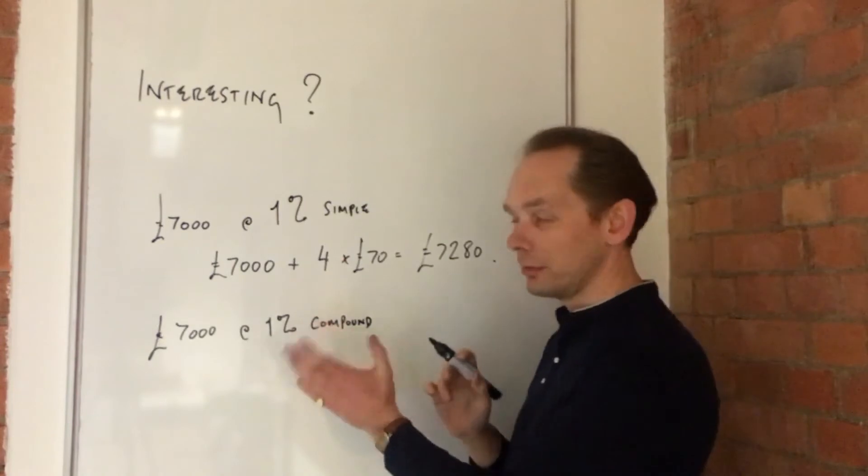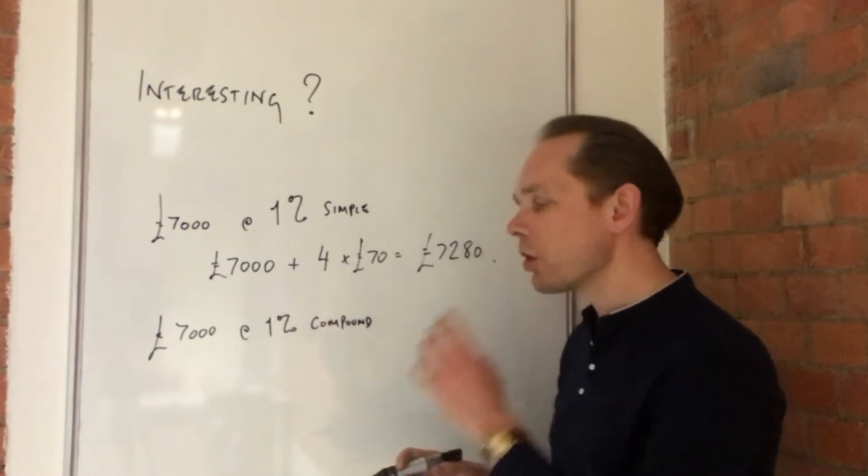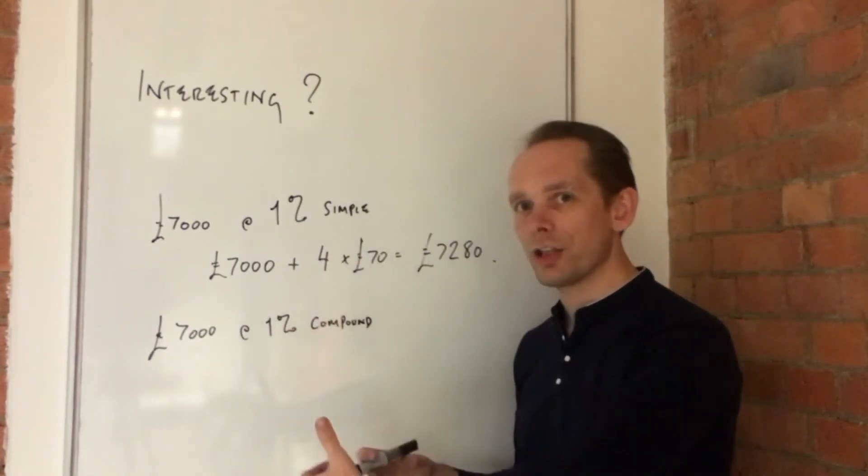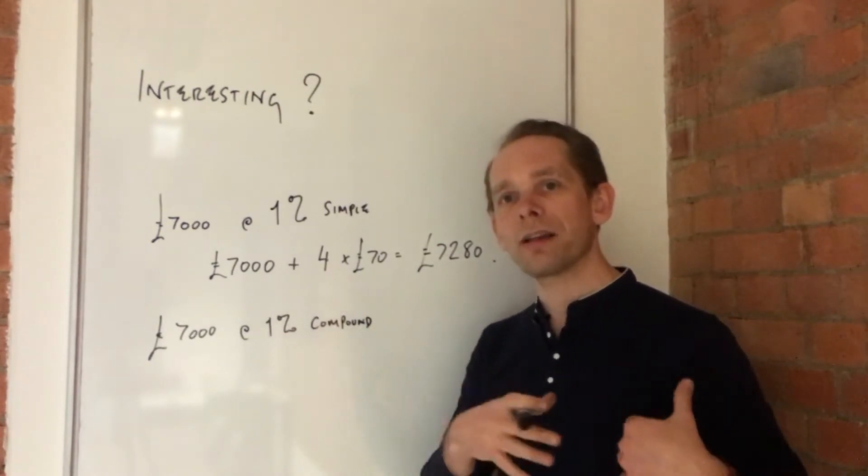Simple. Literally, simple interest. The compound interest is where each year's interest calculation includes whatever has been added on before.